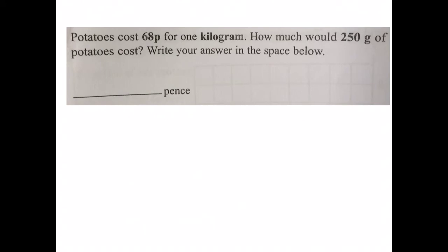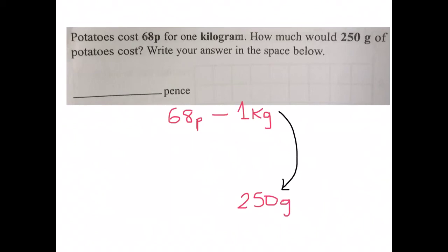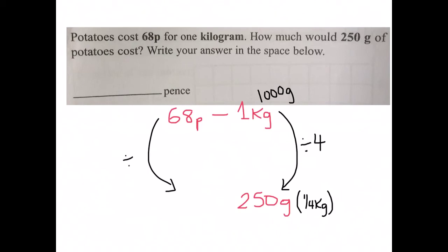Potatoes cost 60p for one kilogram. How much would 250 grams cost? Write your answer in the space below. So 60p is the cost for one kilogram and we need to find the cost of 250 grams. One kilogram is 1000 grams — divide by four to get 250. So divide the price by four: 60p divided by four — four into six goes once with two left over, four into 28 goes seven times. So 250 grams will cost 17p.